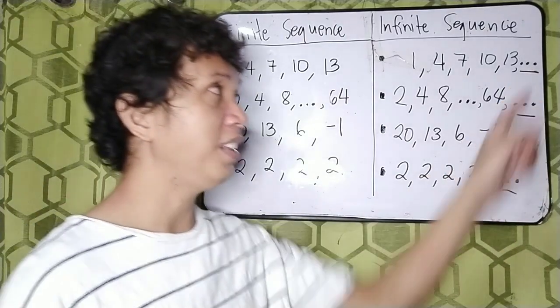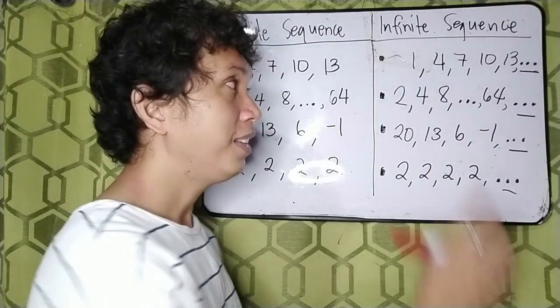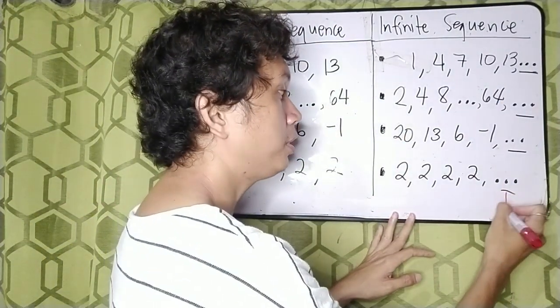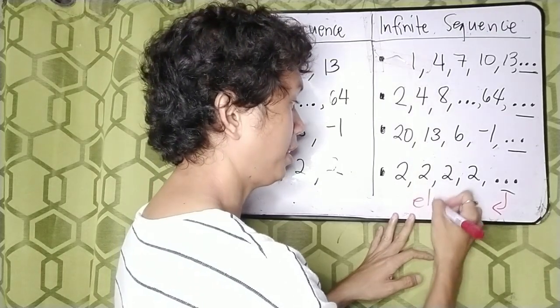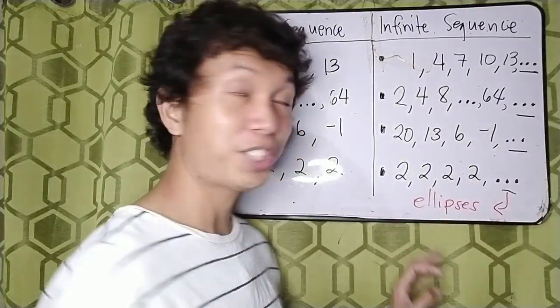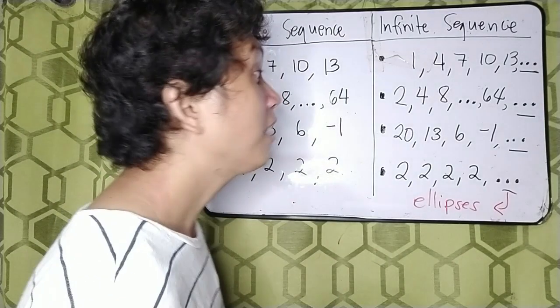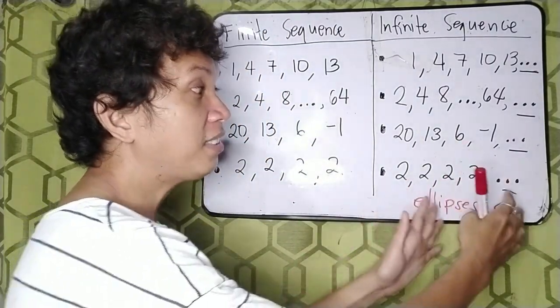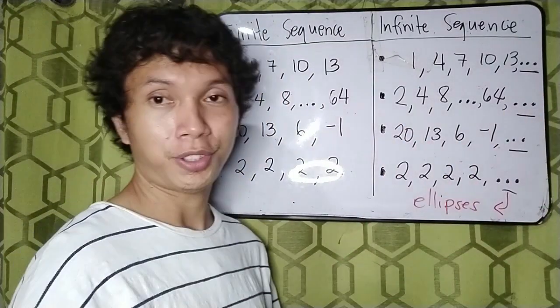So what do we mean by these three dots? These three dots are called ellipses. It is a punctuation mark in English, right? That means it continues.